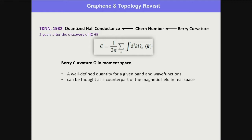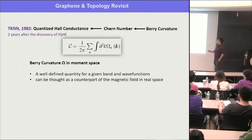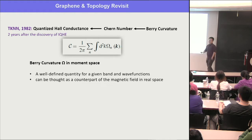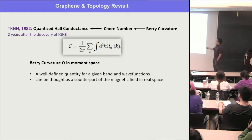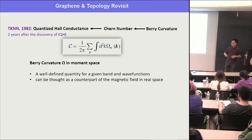The Chern number is the integral of the Berry curvature over momentum space for the occupied bands. The Berry curvature is a well-defined quantity for a given band. If you know the Bloch bands' energy dispersion and wave functions, you can determine omega, the Berry curvature. Its physical meaning: Berry curvature omega is a function of k in momentum space, and can be seen as a counterpart of the magnetic field in real space — effectively like a fictitious magnetic moment.